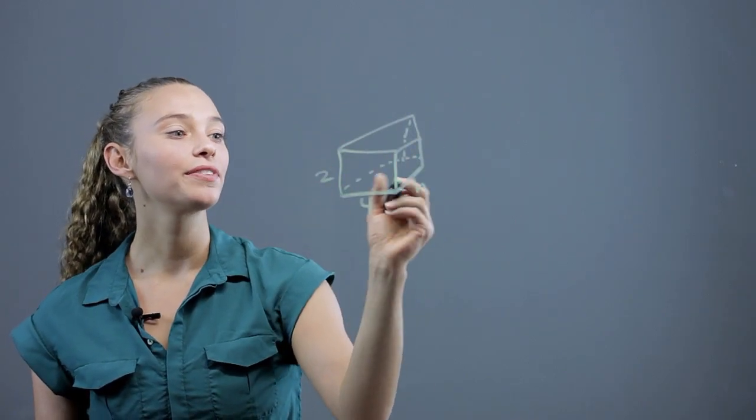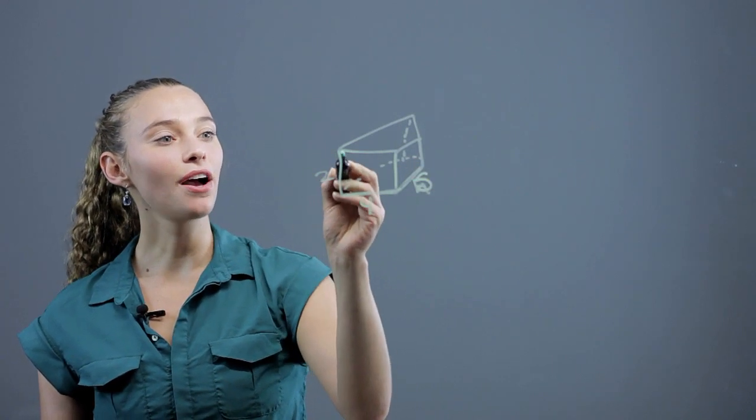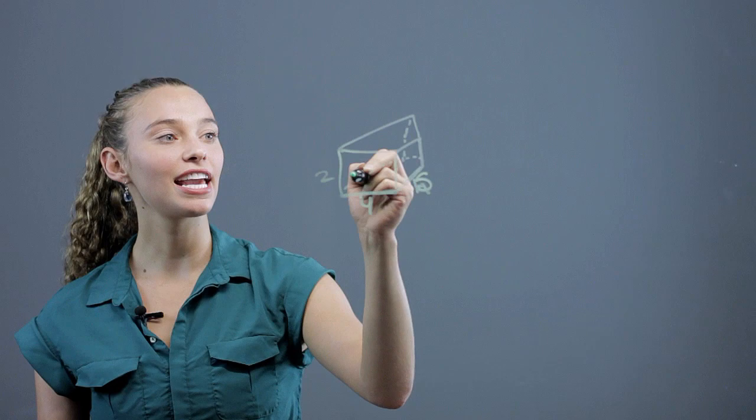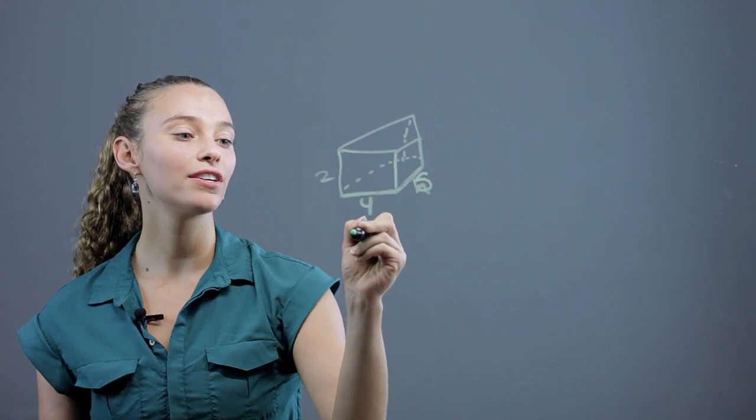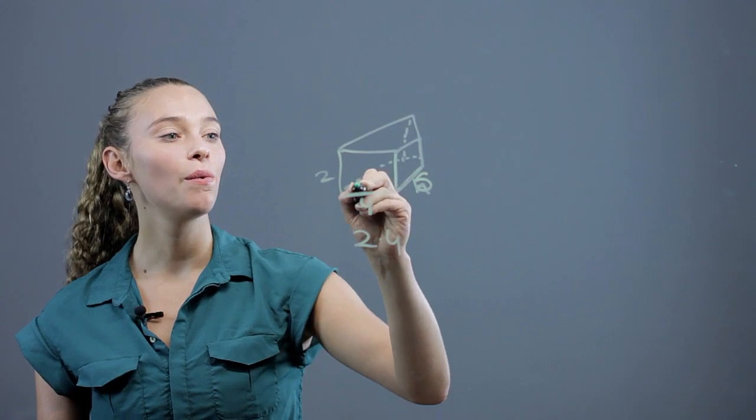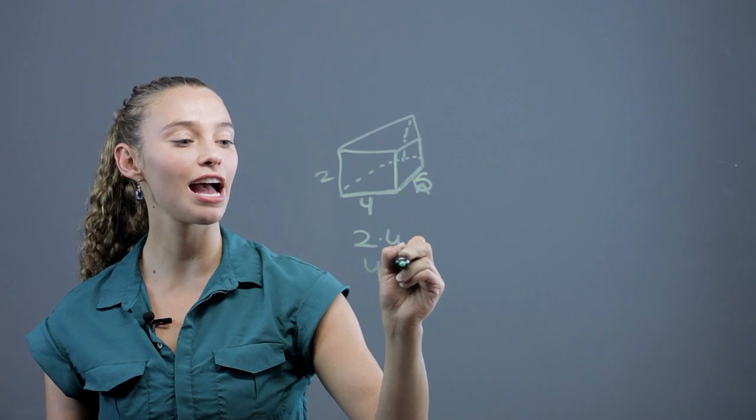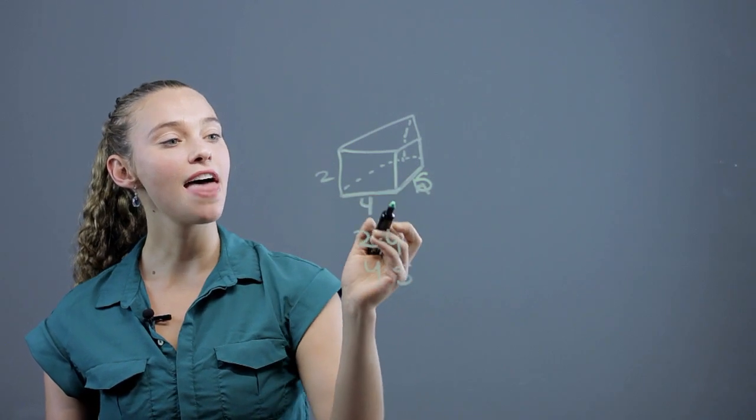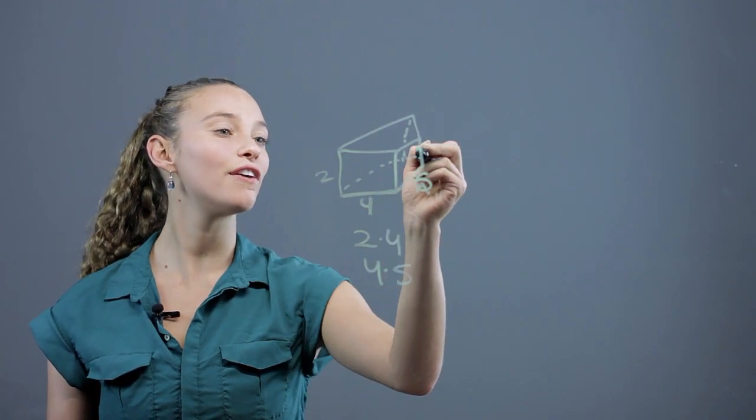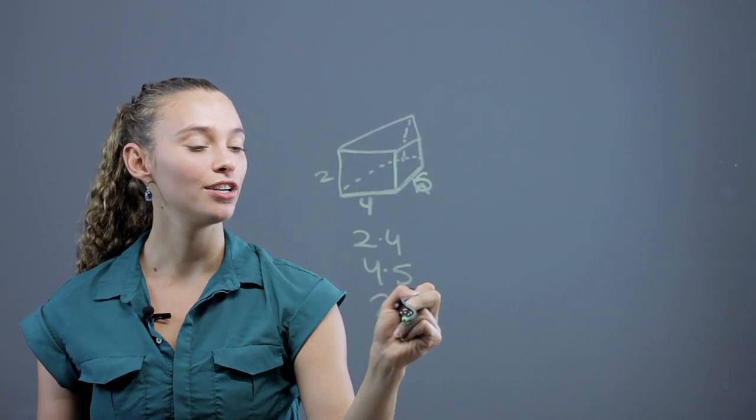Here, the height, let's make this five. We're going to add the rectangles together. We have two times four, that's one rectangle. We have this rectangle on the bottom, which you can see, which is four times five. And then there's the other rectangle of two times five in the back.